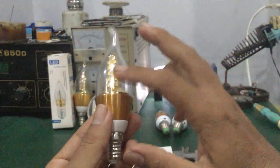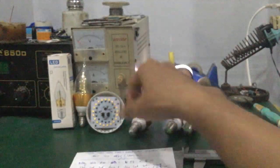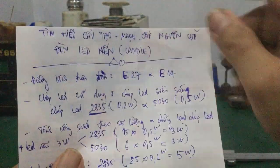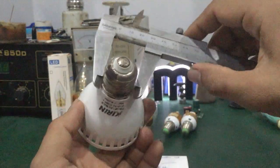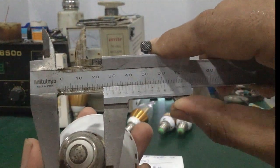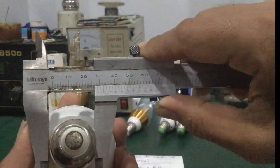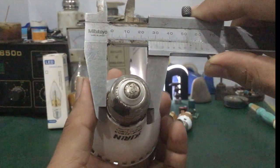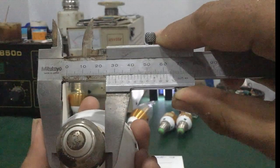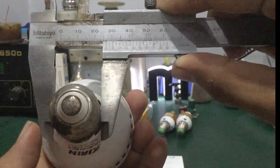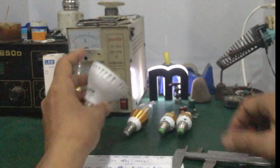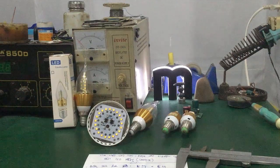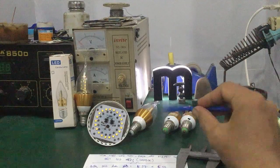Còn một số đèn LED nến như thế này dùng cái đuôi đèn E27. E27 có nghĩa là cái đuôi đèn này có đường kính là 27mm. Ở mấy cái đèn LED nến, thông dụng nhất là cái đuôi đèn E14.